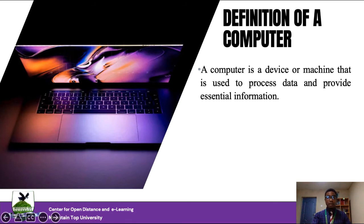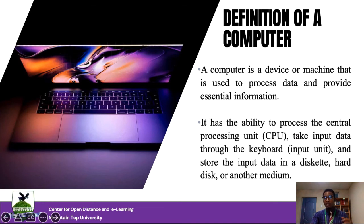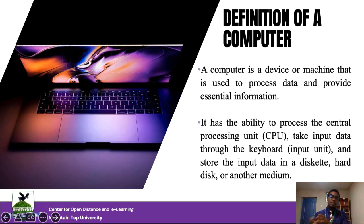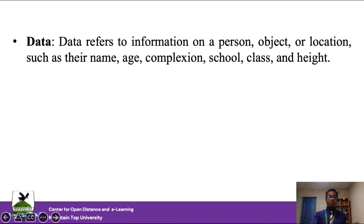A computer is any device or machine that you can use to process data and provide essential information. If you have any tool that can manipulate data provided as input to produce reliable information, then what you have is a computer. It has a central processing unit — the brain of the computer system — which takes input through an input unit such as a keyboard or scanner, stores information in memory like a hard drive, and the CPU processes and transfers it to the output unit.